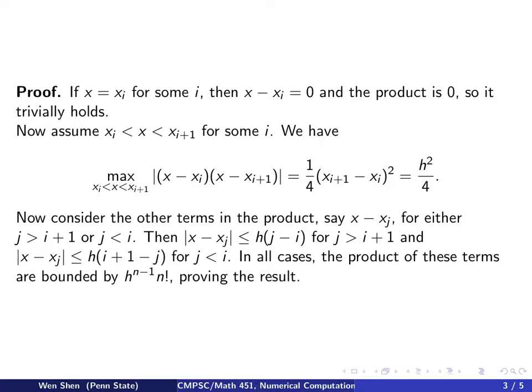And now we can consider other terms in the product, and say the term with the index J. So X minus XJ, and this J shall be either bigger than i plus 1 or strictly less than i. So other than these two terms. And then we know that X minus XJ will be bounded by H times J minus i. So how far away the XJ is from i. For J bigger than i plus 1, and then if you have J less than i, then this term here is bounded by H times i plus 1 minus J, still the difference between their indices. For the case J less than i. And you can check in all cases the product of all these terms, and all together they will be bounded by H to the n minus 1 times n factorial. And this proves the result.